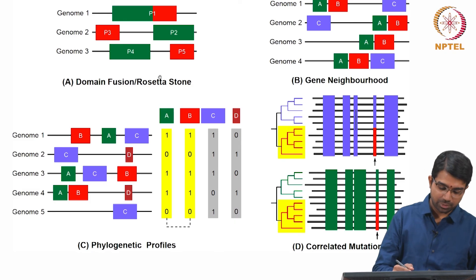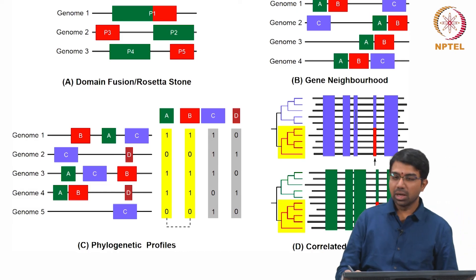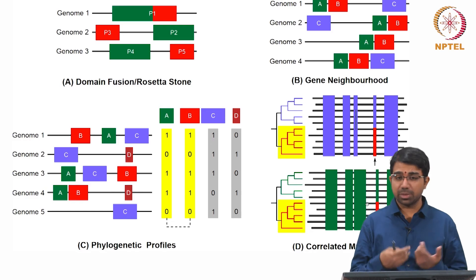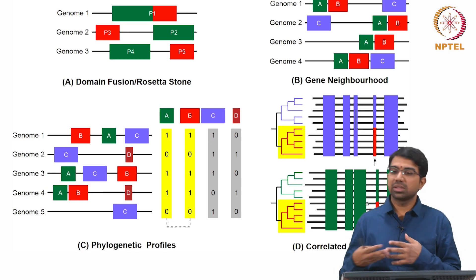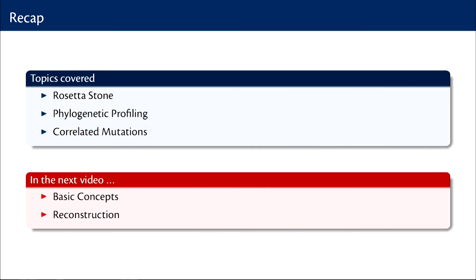You may have some evidence from domain fusion, some evidence from gene neighbourhood, some evidence from phylogenetic profiles, and some evidence from correlated mutations or other aspects such as text mining and experimental data. How do we integrate all of these? That is something we will look at in the next class. So I hope you have an overview of the interesting concepts underlying the reconstruction of protein interactomes — methods such as domain fusion or Rosetta Stone, phylogenetic profiling, and correlated mutations. In the next video we will move over to signaling networks, where I will give you some basic concepts and talk about how we go about reconstructing signaling networks.